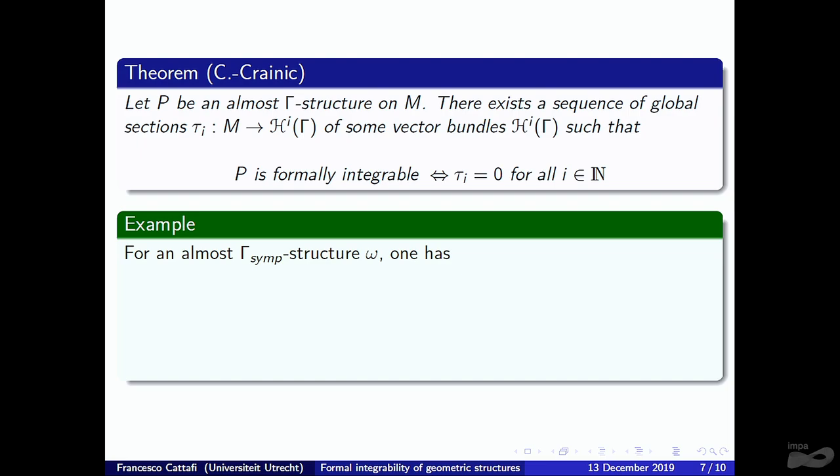In the case of almost symplectic structures, the first obstruction is precisely dω, which we know must vanish, and is the actual obstruction. The higher obstructions all vanish because the vector bundles H_i(gamma) are zero for i ≥ 2 — this follows from nice properties of the jet groupoid of symplectomorphisms. This pattern holds in many other examples: if J^k(gamma) has nice properties, one can know from the outset that there are only finitely many obstructions, all at low order.